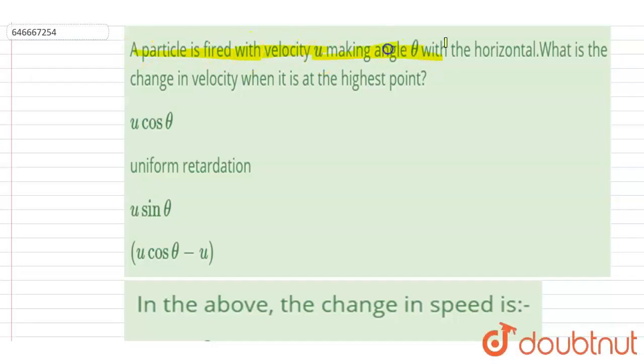Hello everyone. A particle is fired with a velocity u making an angle theta with the horizontal. What is the change in velocity when it is at highest point?